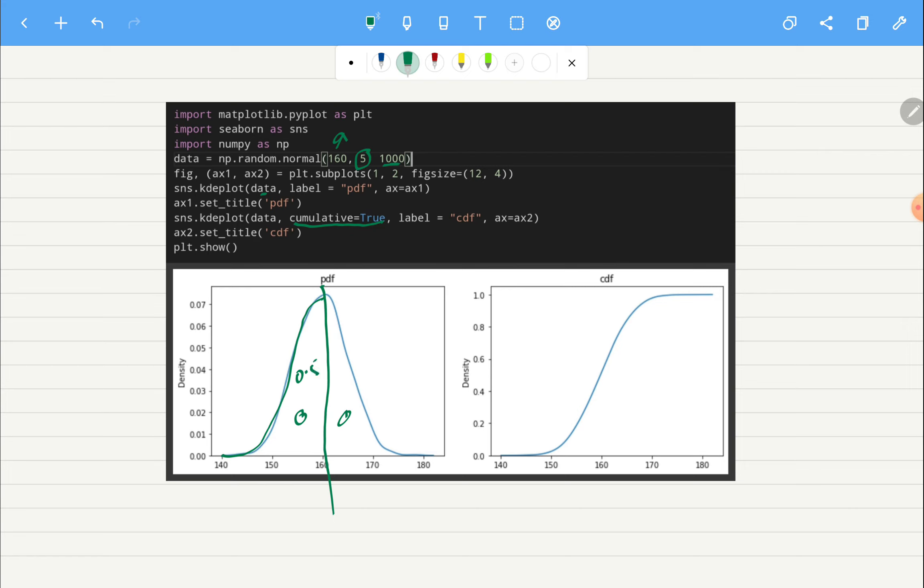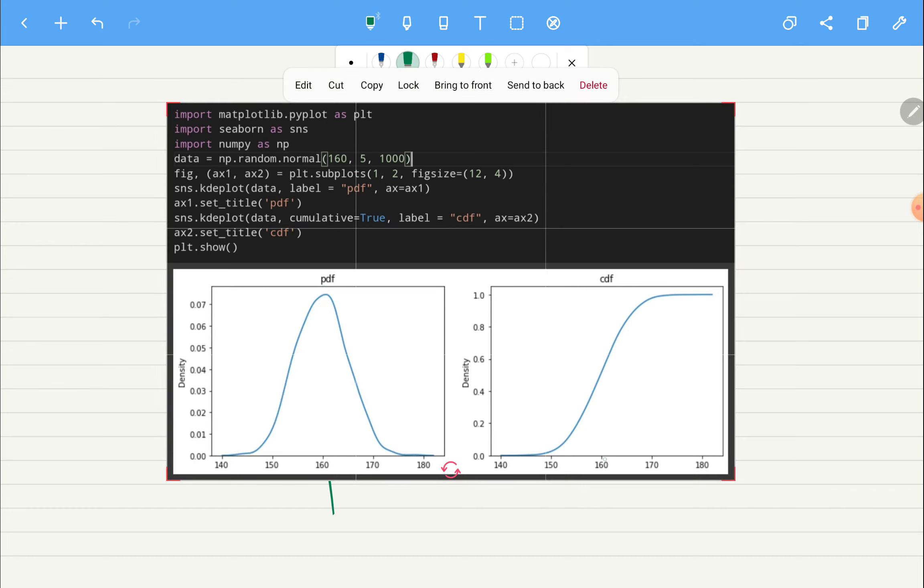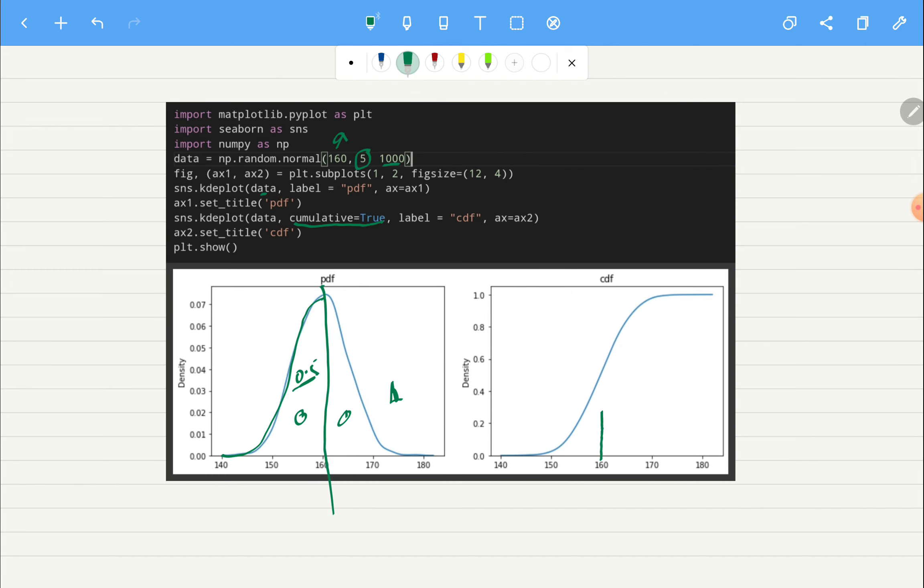And always area under the curve of PDF from start to end will be one. So we know that half of the data is this side and half of the data is that side so we will have our probability as 0.5.